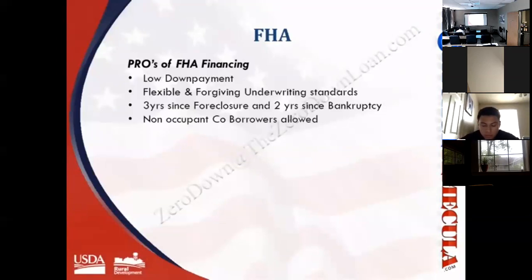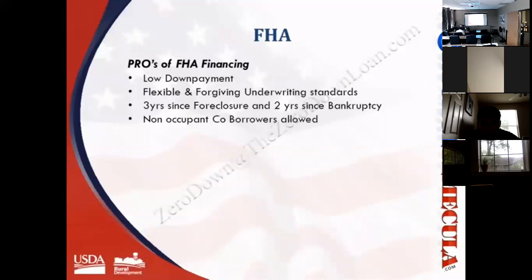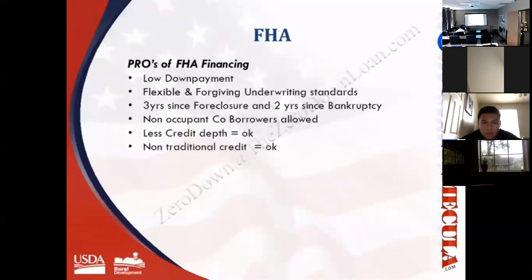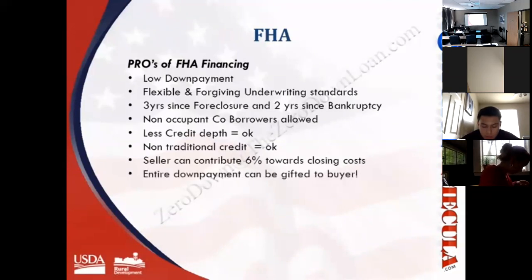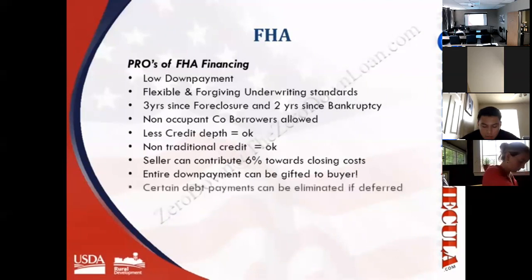FHA allows non-occupant co-borrowers — typically family members — to co-sign without intending to live in the property. FHA allows the lender to use the total income and total debt of all borrowers, so a stronger co-borrower can offset the weaknesses of the primary borrower. Less-than-perfect credit is still accepted. FHA loans can even be made to borrowers with no traditional credit such as credit cards, student loans, or auto loans, accepting non-traditional credit like utilities and cell phone subscriptions. FHA also allows sellers to give closing cost concessions up to six percent.